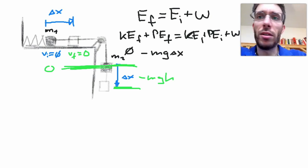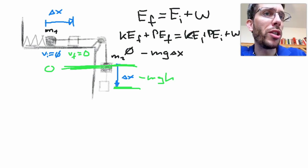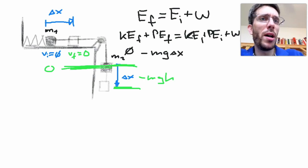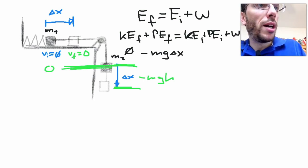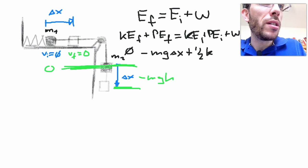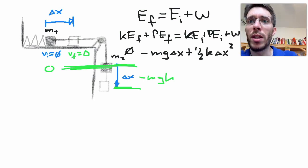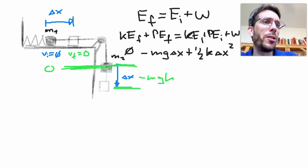What however I can consider with the block at the top is that there will be a spring potential energy as the spring will be extended by the distance delta x. So I have plus one half k delta x squared as my final energy.